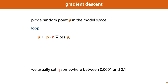As before, we start by picking a random point p in the model space, we enter a loop, and then all we do is subtract from our current point the gradient of the loss at p multiplied by some value eta. Eta is called the learning rate, and it's a hyperparameter that helps us control how big a step we want to take. The reason we only take small steps is that the gradient is only a linear approximation to our loss function. So the further we move away from p, the worse our approximation gets, and if we've moved too far from p, we should recompute that approximation.